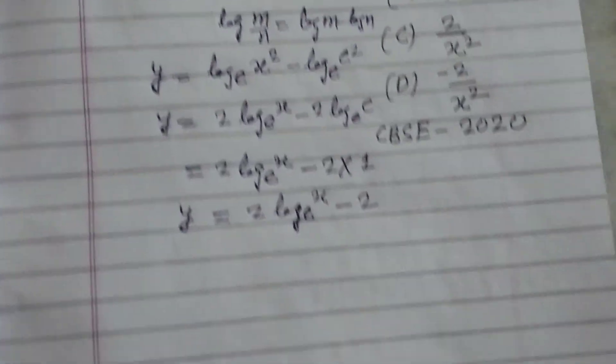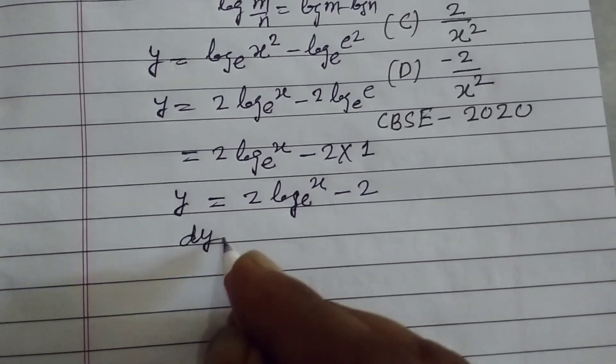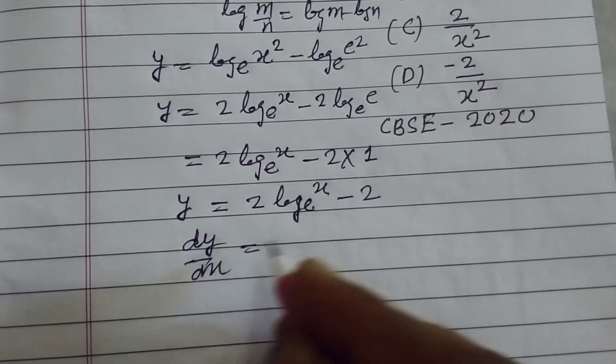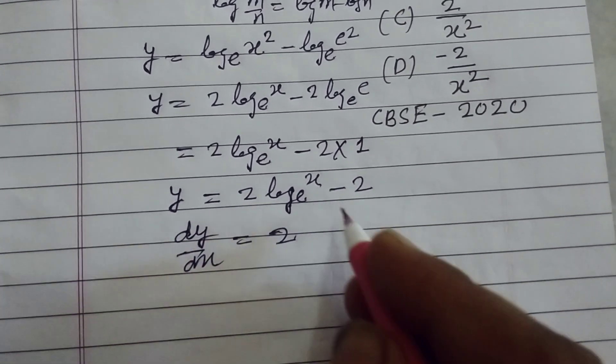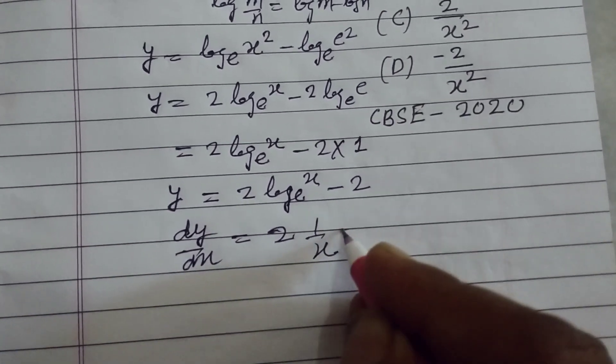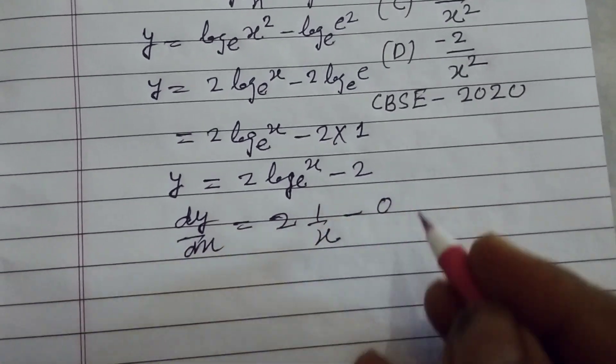Now differentiating this with respect to x. So dy by dx, multiply by 2, differentiation of log x is 1 upon x, and differentiation of 2 is 0.